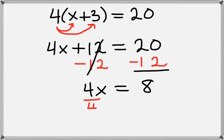Now we want to get x by itself, so we divide by 4 on the left-hand side and the right-hand side, which leaves us x equals 8 divided by 4, which is 2.